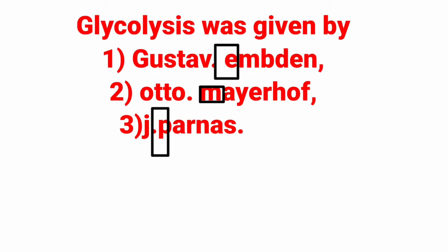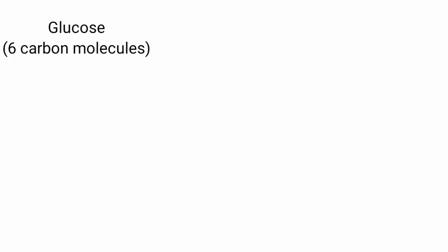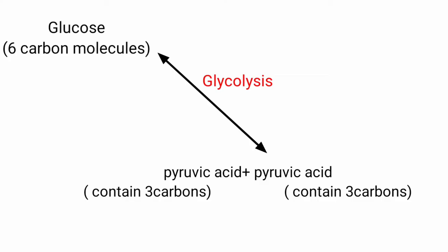In glycolysis, glucose is a 6-carbon molecule. Through this process, glucose is broken down into 3-carbon molecules. These 3-carbon compounds are pyruvic acid.